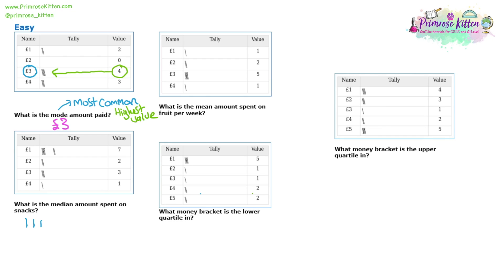Let's draw them out: one, two, three, four, five, six, seven. Then we have two lots of two pounds, three lots of three pounds, and one lot of four pounds. So the tally chart is actually representing this list of numbers. Then the normal thing you would do is find the middle number. So cross off the largest and keep crossing off the smallest and largest in pairs until we only have one or two numbers left. The middle number is actually a one. So what's the median amount spent on snacks? It is one pound.